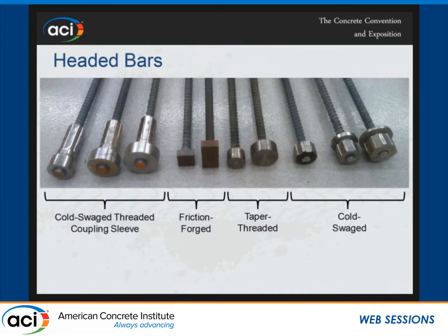For the headed bars, it's just a snapshot of the different types of headed bars. The ones on the right meet the ACI and ASTM requirements. The ones on the left do not because they have large obstructions. But what we found is that if you have the bearing area outside the obstruction at least four times the area of the bar, it works well. So all these work well, and we're working on ASTM right now on A970 to make these legal.